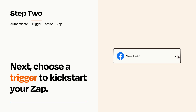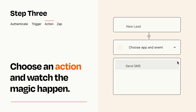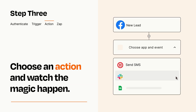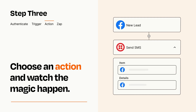This last part is where the magic happens. Choose the action you want to happen in your target app. You'll see a bunch of fields where you can specify the details of your Zap. You can type free form text or pull data in from your trigger step as needed.